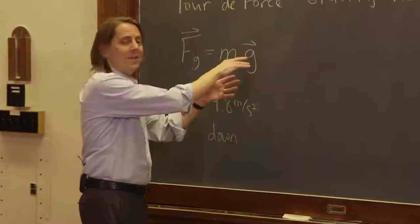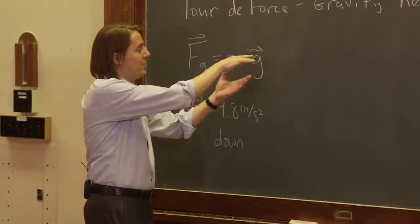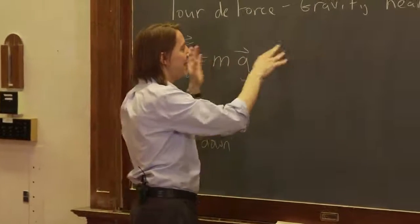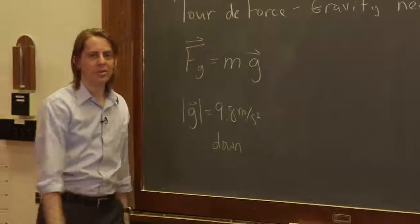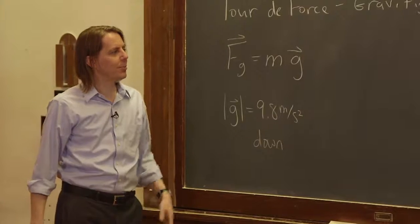The reason they fell at 9.8 meters per second squared is because when you set this equal to ma and the masses cancel, the acceleration you get is equal to the small g gravitational constant. But let's go look and see what the actual forces were when we dropped those masses.